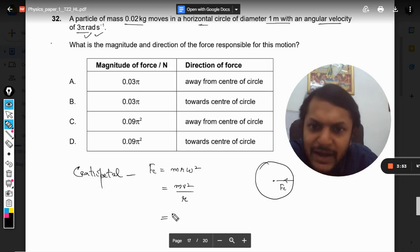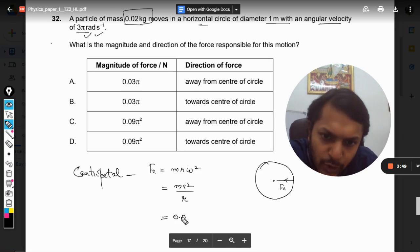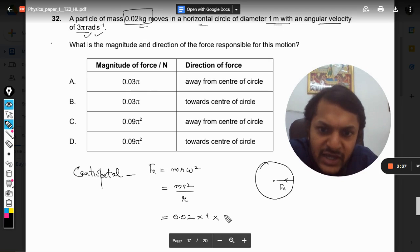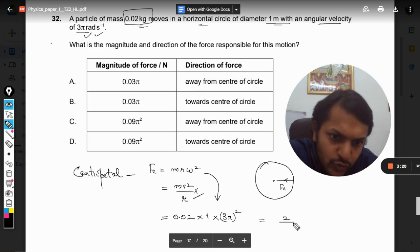As per the magnitude is concerned, m is the mass 0.02, radius is to be taken as 1, and we would be very careful that all the units should be in SI. So it will be 3 pi square. I'm using this formula, so it will be 2 divided by 100 multiply by 9 pi square.